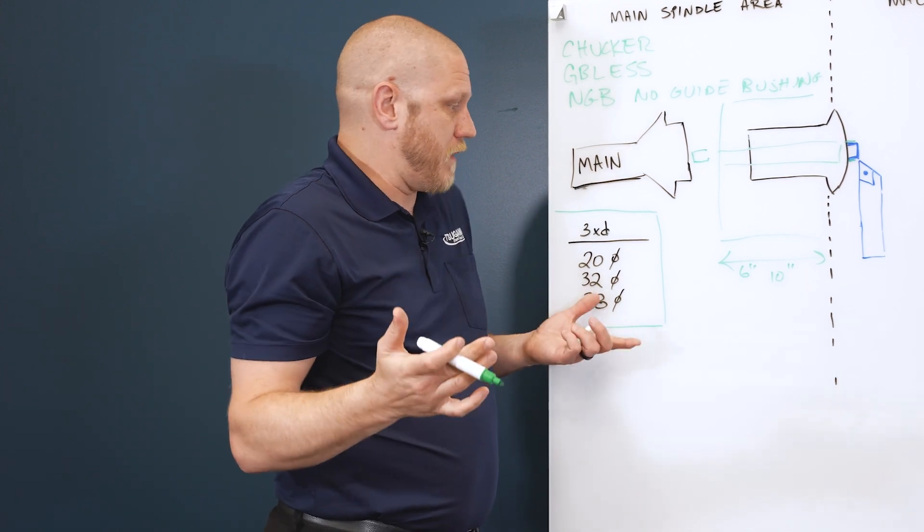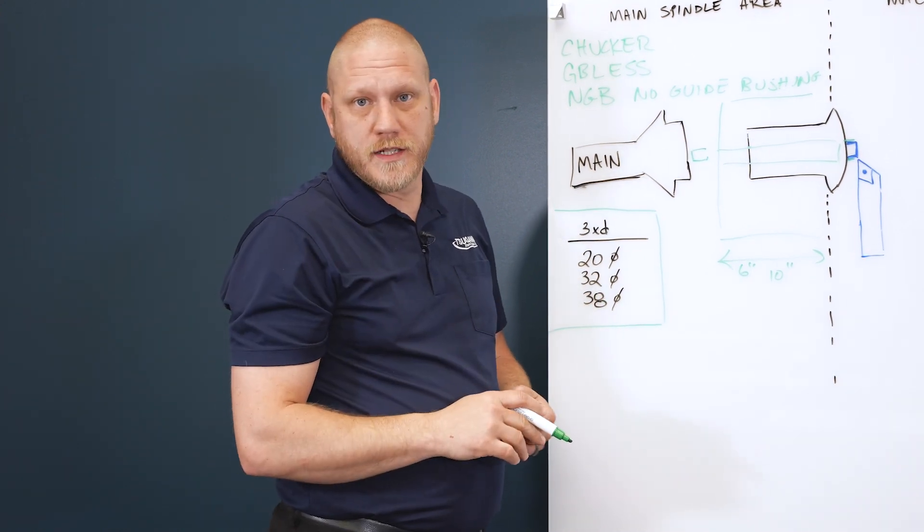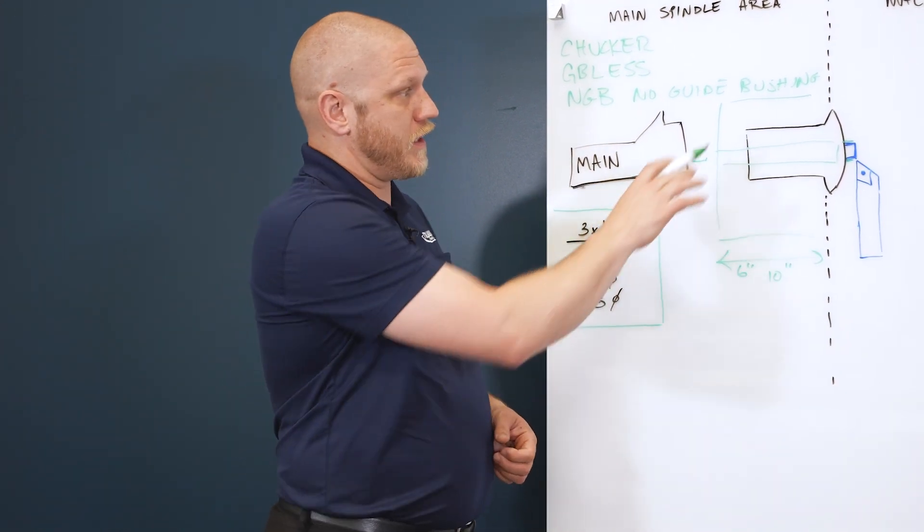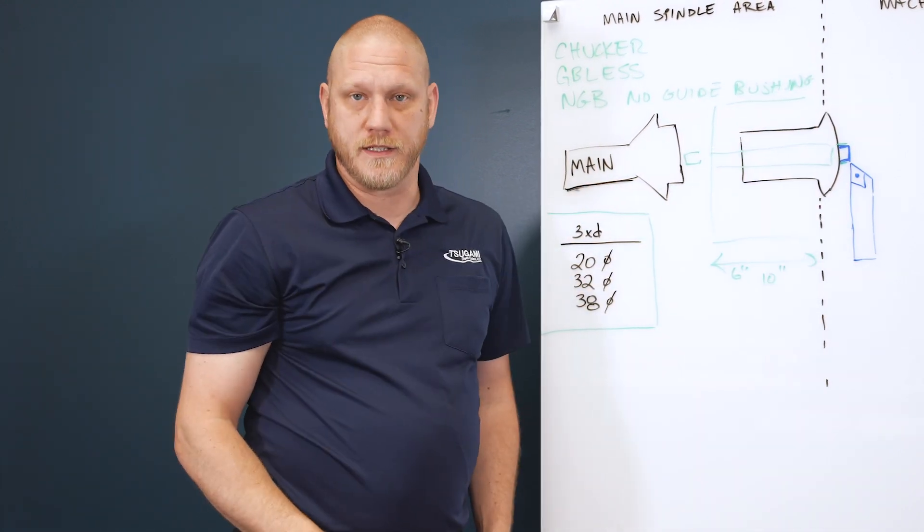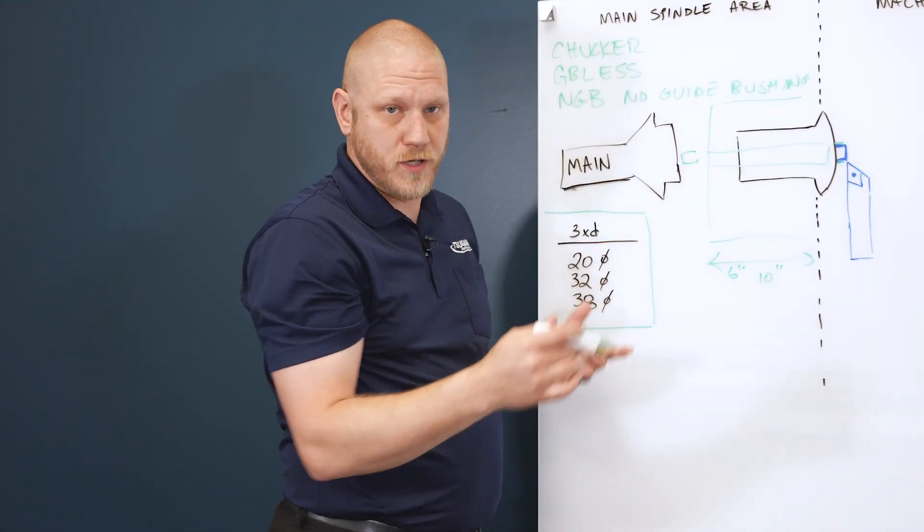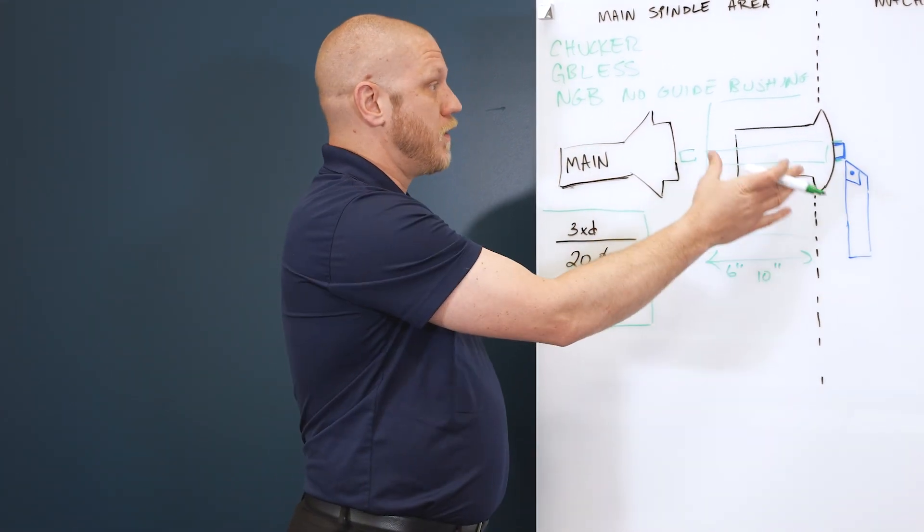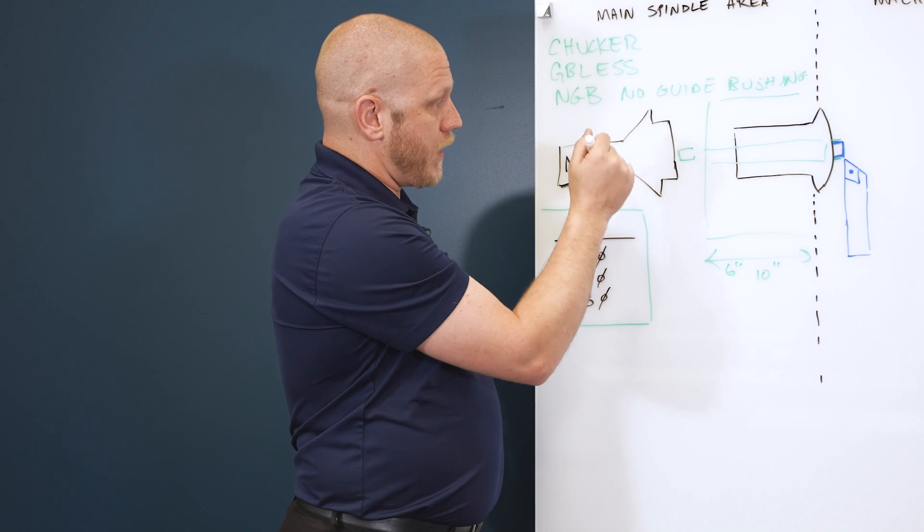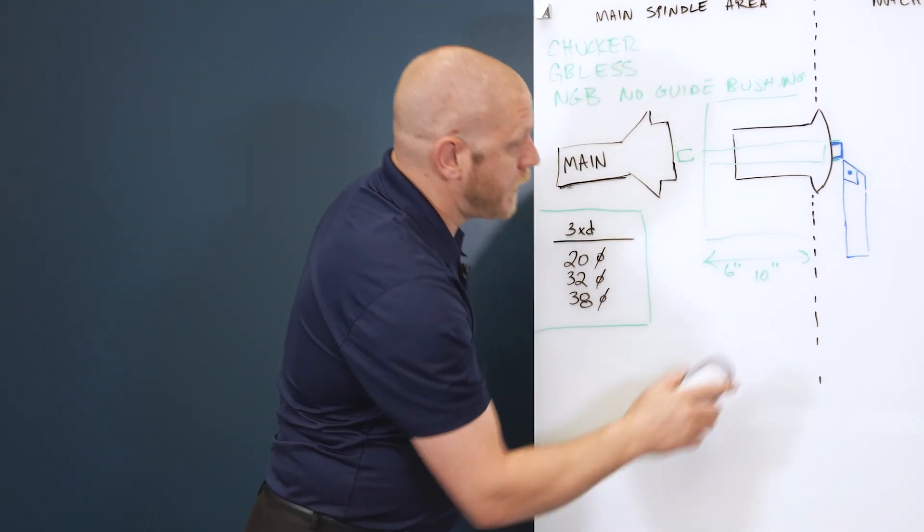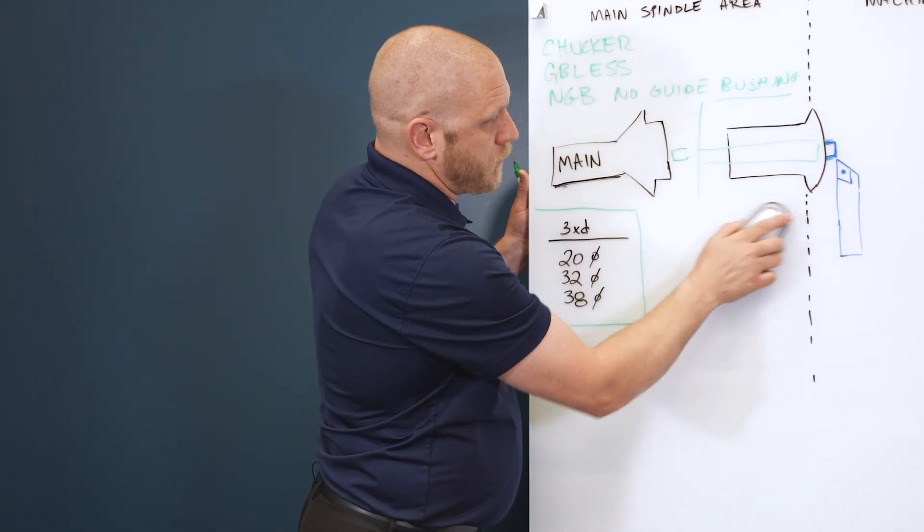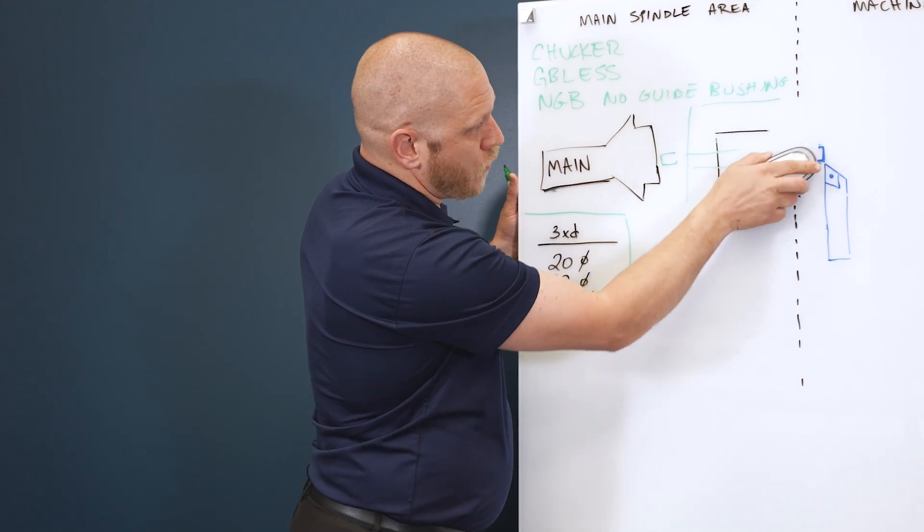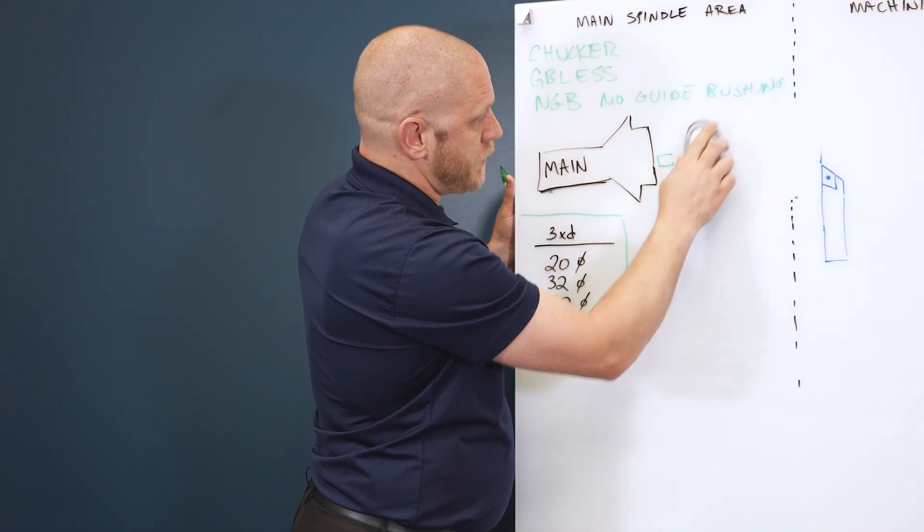With chukar mode, it eliminates this guide bushing completely. With guide bushing-less mode, you basically take out this whole motor or this whole belt-driven assembly, and we're eliminating this whole piece here.